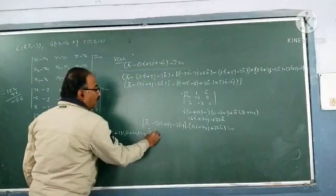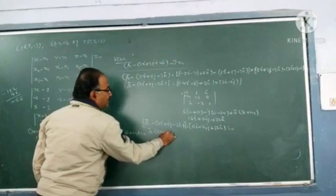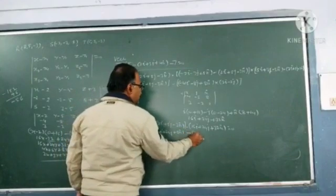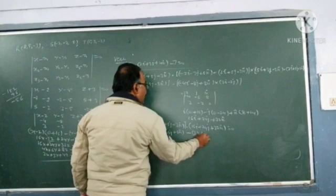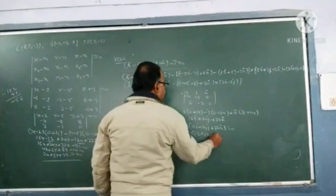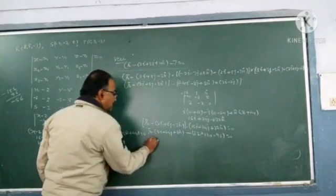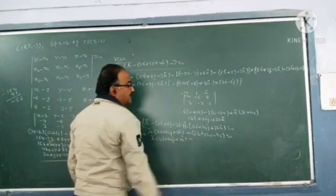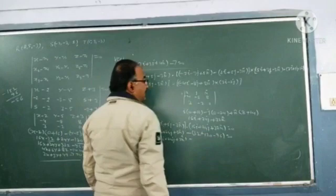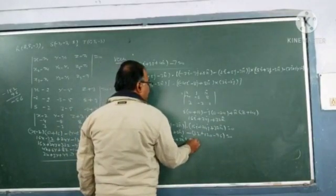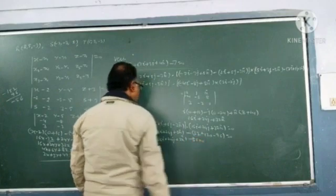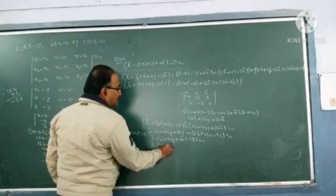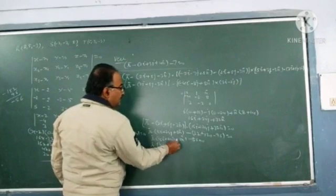Multiply r dot 16i plus 24j plus 32k. This is r dot 16i plus 24j plus 32k minus the constant. Final form: r dot 4i plus 6j plus 8k equals the constant.